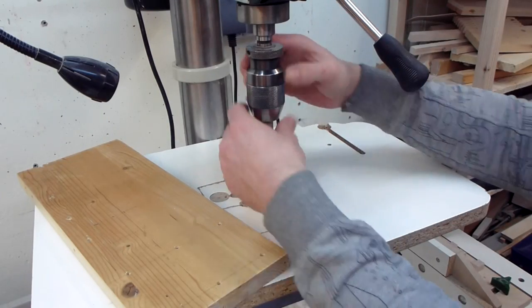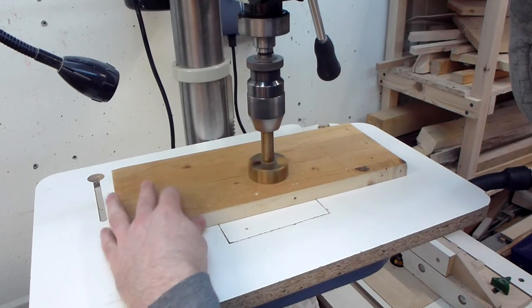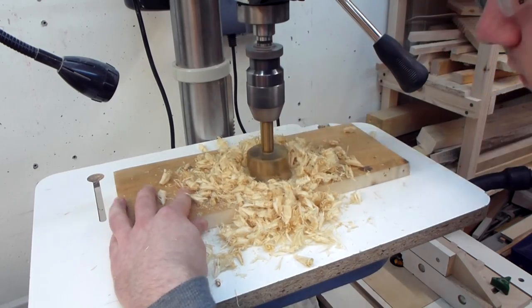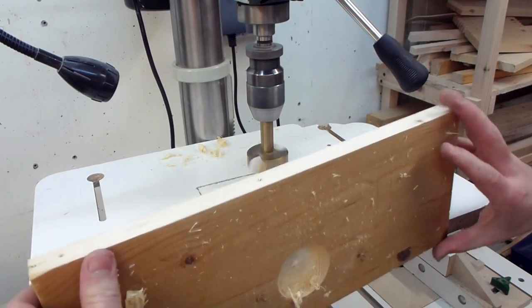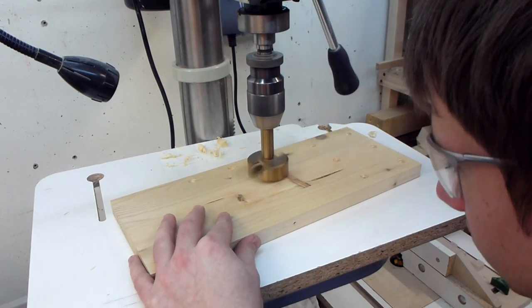Therefore I used a forstner bit to cut a hole into one of the side boards. My method to get tear-out free holes is to drill until just the tip of the drill reaches the other side, then turn the piece around and finish the hole from that side.